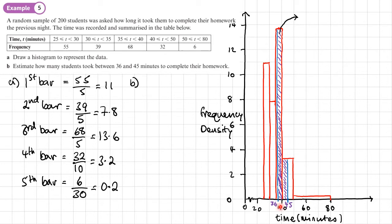So this part here is going from 36 to 40. So its width is 40 minus 36 times by its height. And that height is here, 13.6. So that gives a frequency of 54.4.